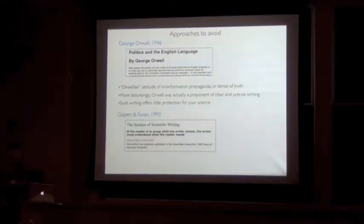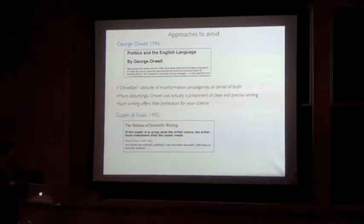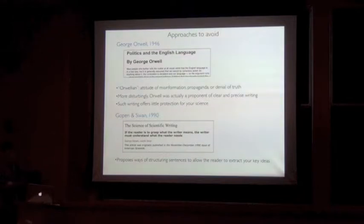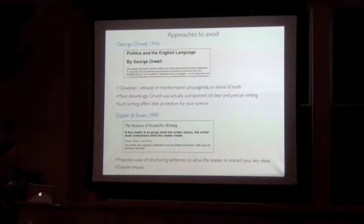Almost as bad, an article written in the 1990s by George Gopen and Judith Swan. It's called The Science of Scientific Writing. In it, the authors propose ways of structuring sentences to allow the reader to most easily extract your key ideas. Again, another approach best avoided by the wise reader.